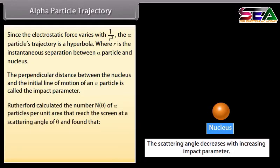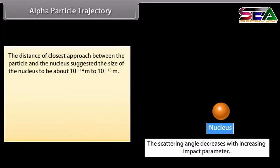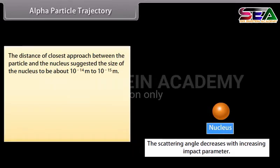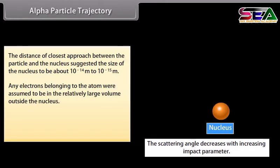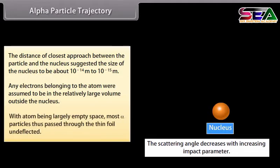Rutherford calculated the number N(θ) of alpha particles per unit area that reached the screen at a scattering angle θ, and found that N(θ) is inversely proportional to sin(θ/2) raised to the power 4. The distance of closest approach suggested the size of the nucleus to be about 10 raised to the power minus 14 meter to 10 raised to the power minus 15 meter. Electrons were assumed to be in the relatively large volume outside the nucleus, with the atom being largely empty space, so most alpha particles passed through undeflected.